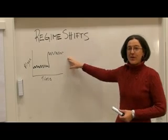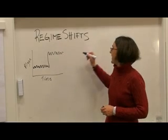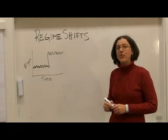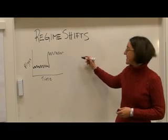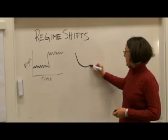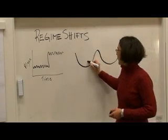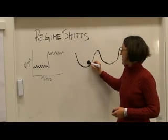Another way in which we often represent these regime shifts is to think of them metaphorically as a cup and ball or with these two different valleys. So we can think of these regimes as two kind of basins of attraction or valleys, and we think of the system state as a ball.